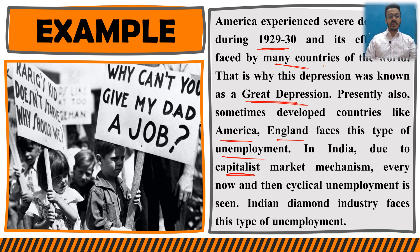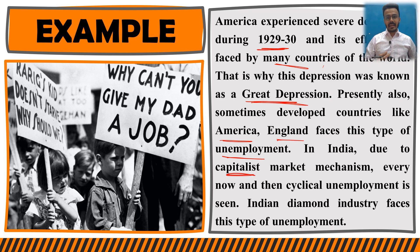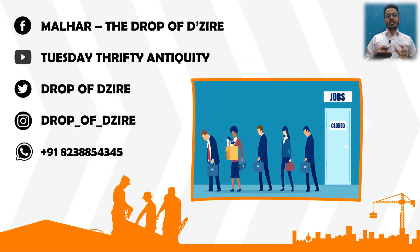So this was the example regarding cyclical unemployment. The clear meaning is: sometimes there is a boom and sometimes a slowdown. When the market is high, people get jobs, earn money, make purchases, and demand in the market rises. But when there is a depression, people lose their jobs, and those people are called the cyclically unemployed. Friends, I hope you have clarity regarding cyclical unemployment. If you like this video, please share and comment, and press the bell icon to subscribe to my channel and get more videos. Thank you so much.